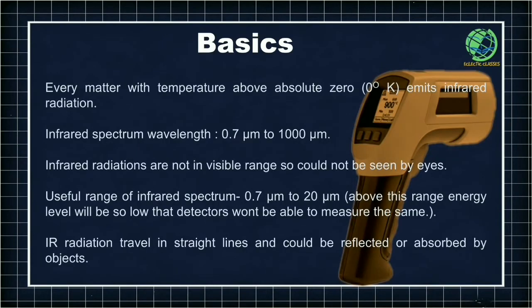So let us start with the basics. Any object which is above the absolute zero temperature — that is zero degrees Kelvin — will always emit infrared radiation. The infrared radiation spectrum wavelength ranges from 0.7 micrometer to 1000 micrometer. However, for infrared thermometers we use only 0.7 micrometer to 20 micrometer of that spectrum, as any radiation above this range results in a very low energy level — so low that detectors cannot measure it.